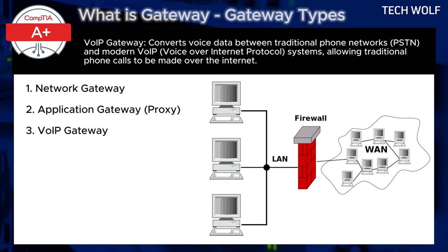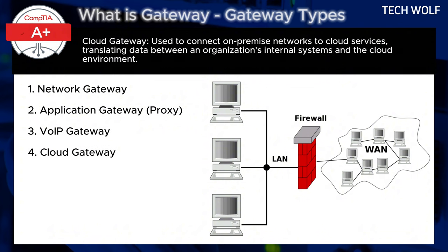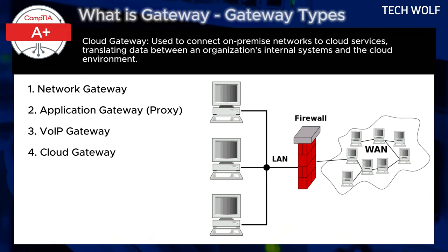VoIP gateways, or voice over IP gateways, convert data between traditional phone networks (PSTN) and modern VoIP systems, allowing traditional phone calls to be made over the internet. Cloud gateways are used to connect on-premise networks to cloud services, translating data between an organization's internal systems and the cloud environment.